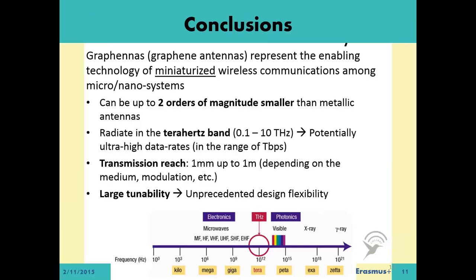To summarize, graphennas represent the enabling technology of miniaturized wireless communications among micro and nano systems. They can be up to two orders of magnitude smaller than metallic antennas, and they radiate in the terahertz band between 0.1 THz and 10 THz. Therefore, they offer potentially ultra-high data rates in the terahertz-per-second range. The transmission range is usually 1 mm, but depending on the application, medium, and modulation, it can reach up to 1 meter. They also offer large tunability capabilities, leading to unprecedented design flexibility.